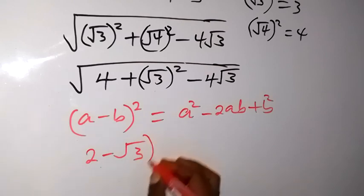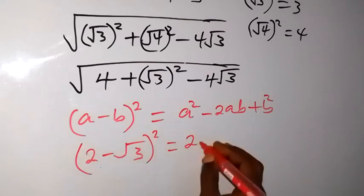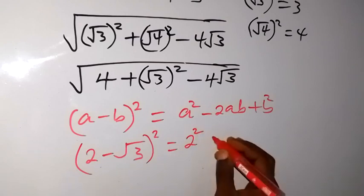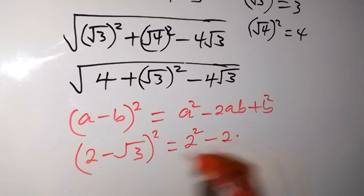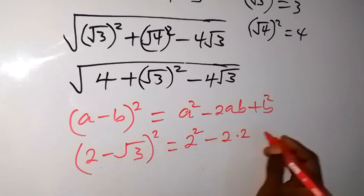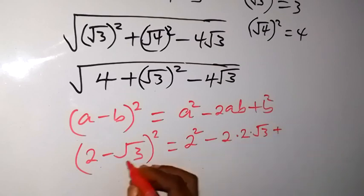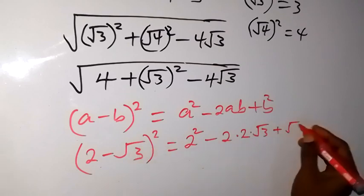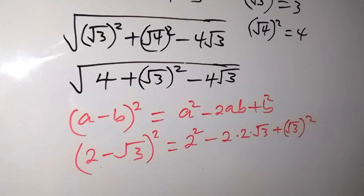And when we square this, we have 2 squared, and 2 squared is 4, then minus 2 times a which is 2, then times b which is root 3, then plus b squared which is root 3 squared. And when we rearrange this, we see that it looks like what we have inside this root up here.